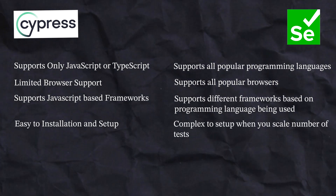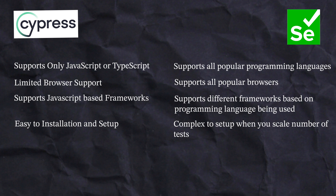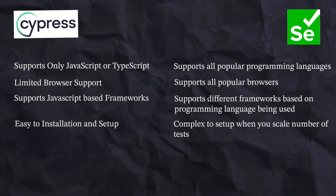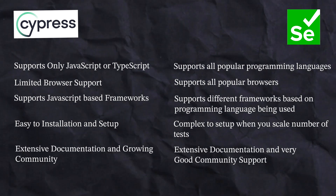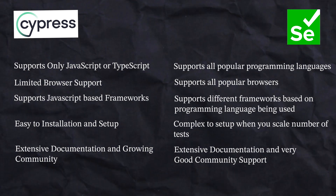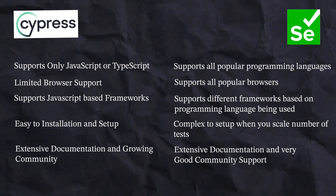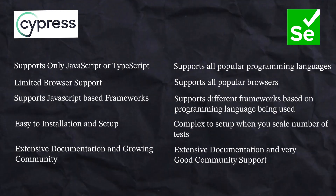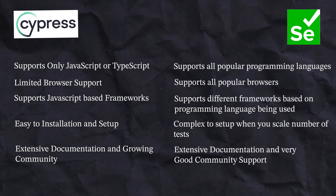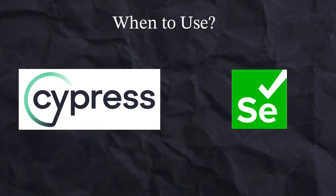Regarding setup complexity, Cypress setup is simple with no additional downloads required, but Selenium with distributed systems like Selenium Grid can be more challenging and requires more infrastructure knowledge. For documentation and community support, Cypress has very good documentation and a rapidly growing community, while Selenium, having been established for 20 years, has very good documentation and firm community support from across the globe.